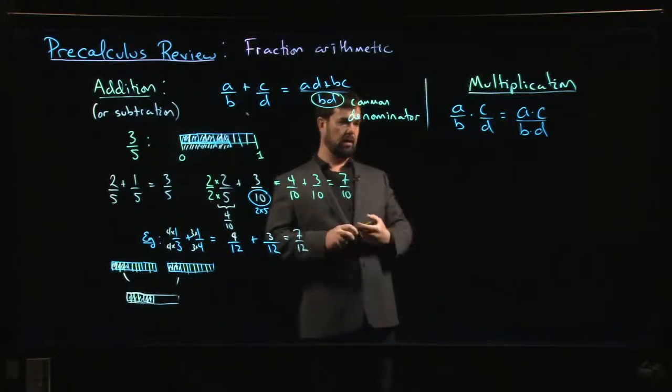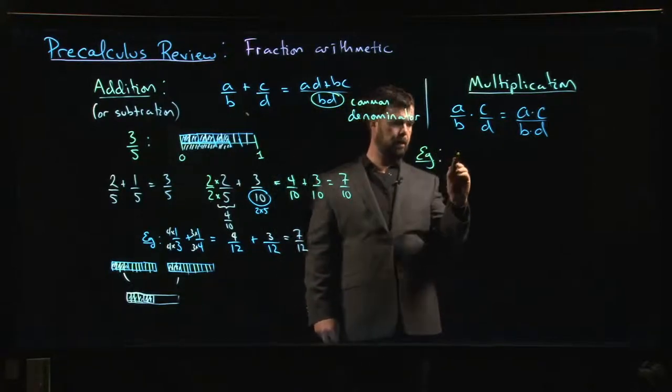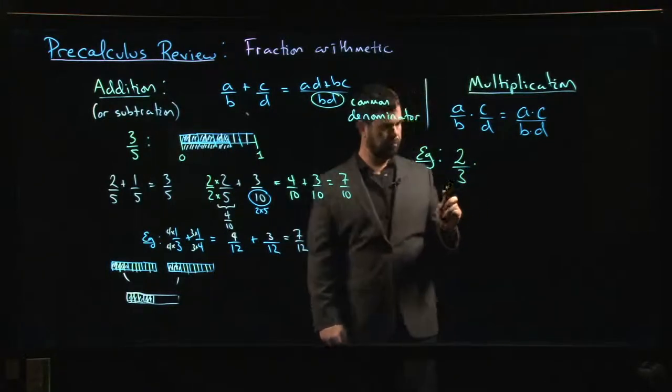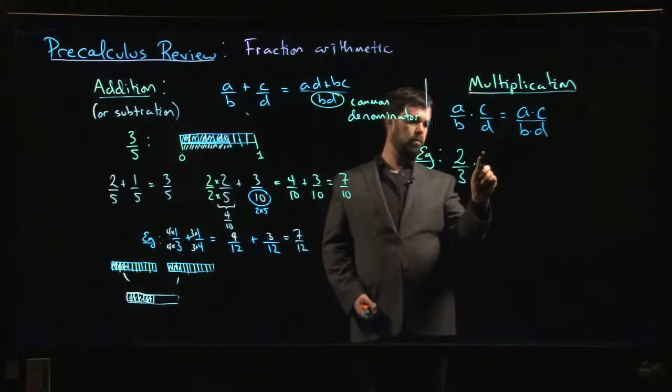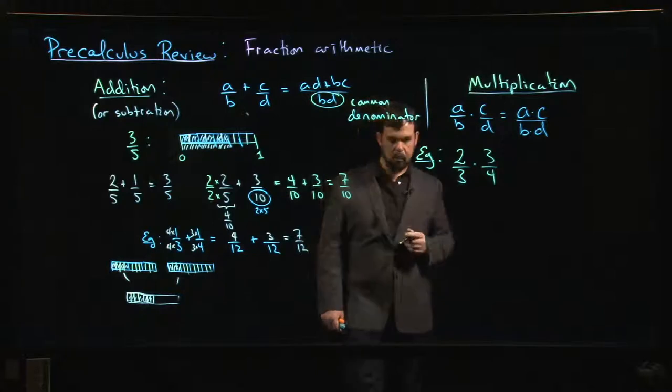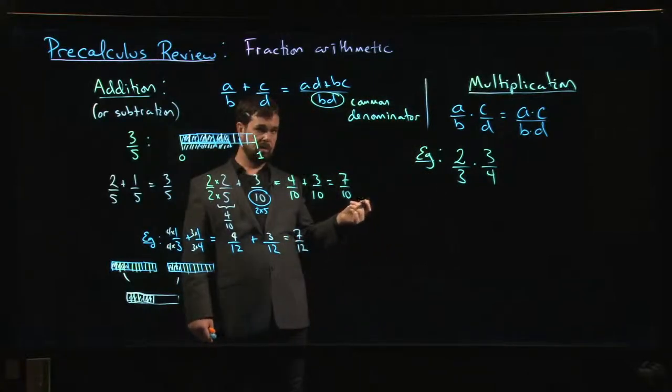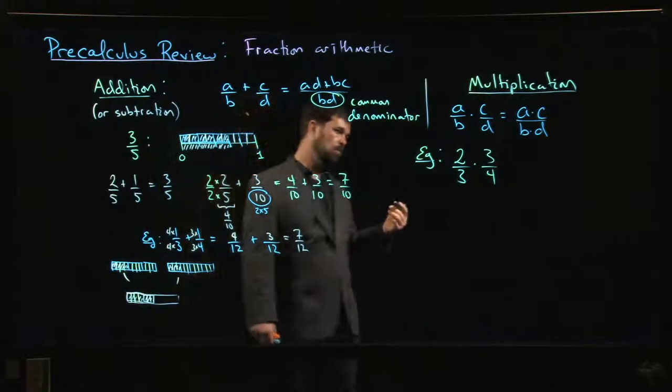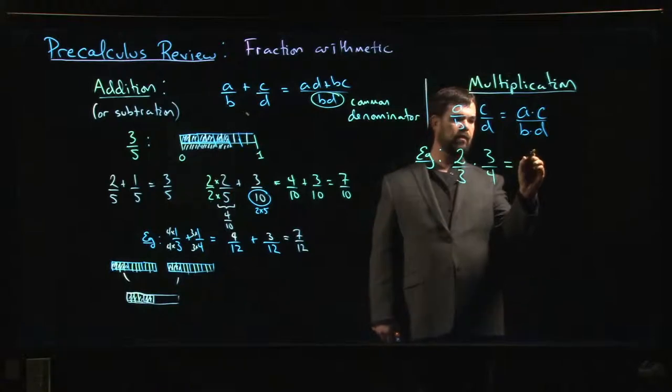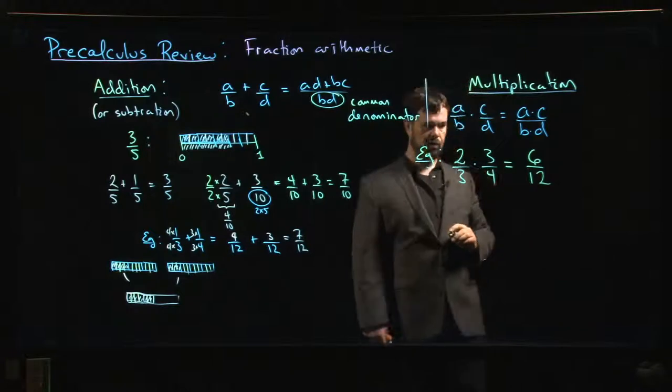Think about doing something like, say, two thirds times three quarters, something like that. Now there's a few different ways that you can do this. We could blindly apply the rule, so if we apply the rule we get two times three is six, three times four is twelve.